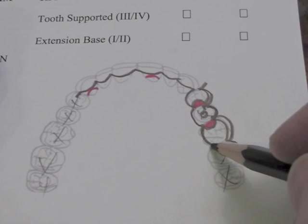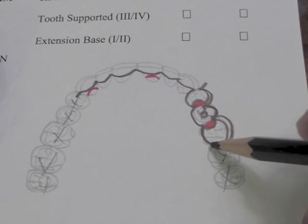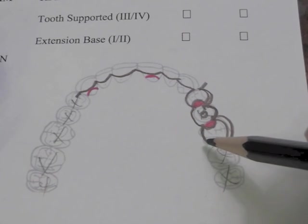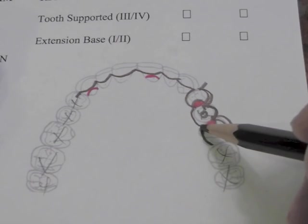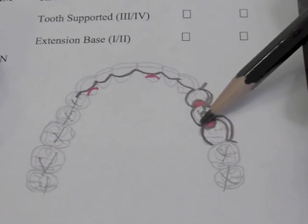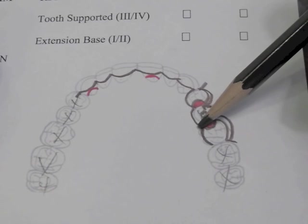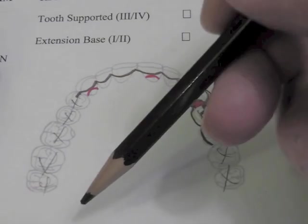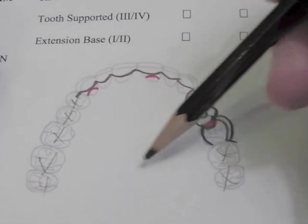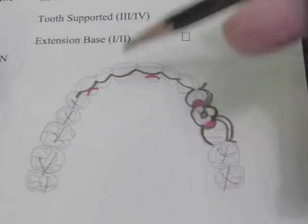Our major connector will swing back from here. We can choose to end our major connector here and put an arm on that tooth, but then we'd be swinging across the palate obliquely with the back portion. Patients don't like obliquely crossing frameworks. They want symmetry. It needs to cross the midline perpendicular to it.